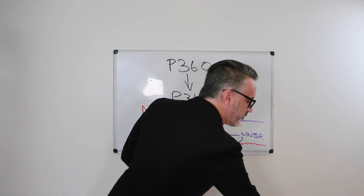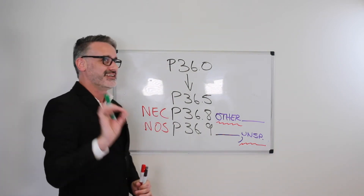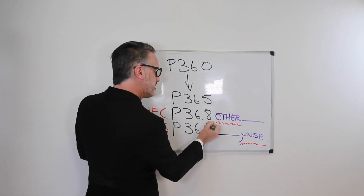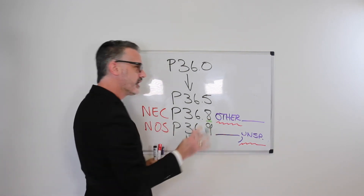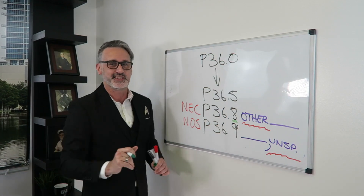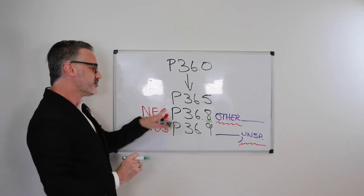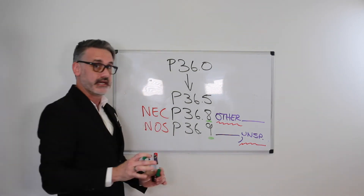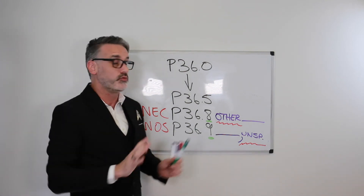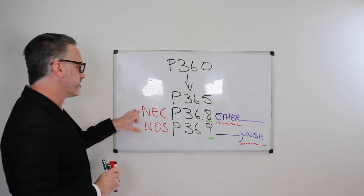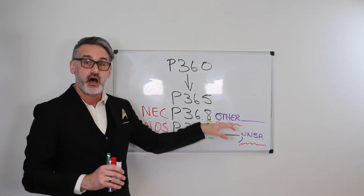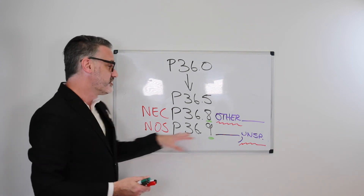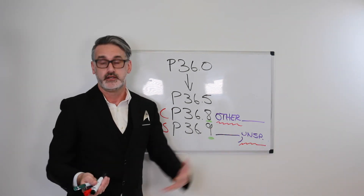Another pattern that works often — not always — is that NEC codes tend to end in the number eight, and NOS codes tend to end in a nine. But again, you can't always rely on that. What you can always rely on is: NEC codes will say 'other [blank]' in the description, and NOS codes will say '[blank], unspecified.'